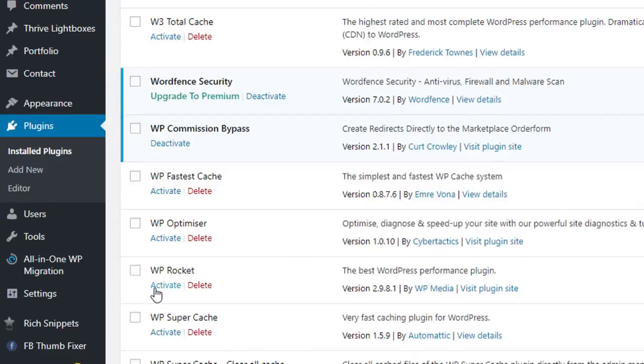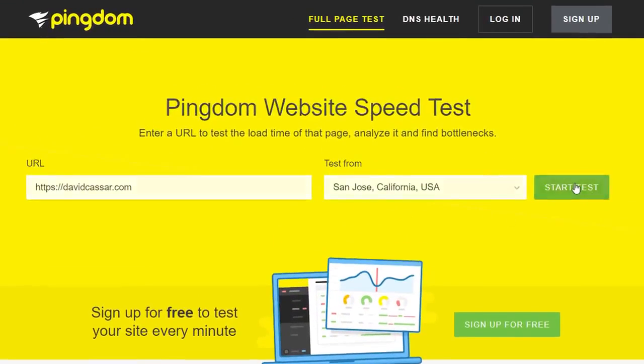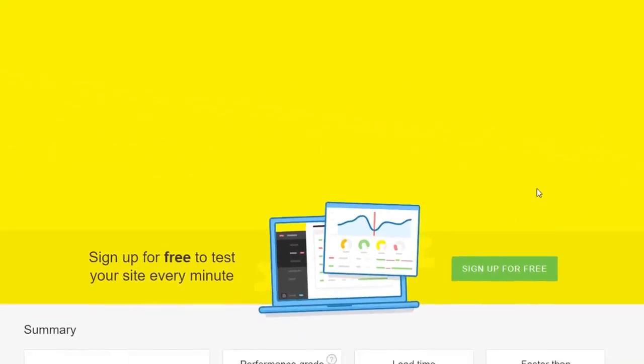So let's start with WP Rocket and enable it here. I see they have an update, so let's make sure this is running the latest version. And then we're going to leave it with the default settings and then run the speed test again to see if it works as well as they say it does.